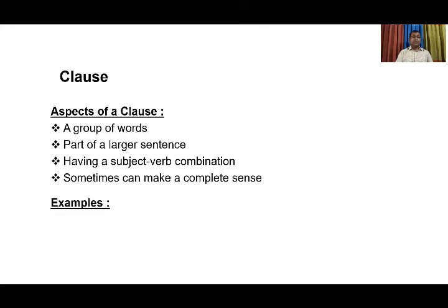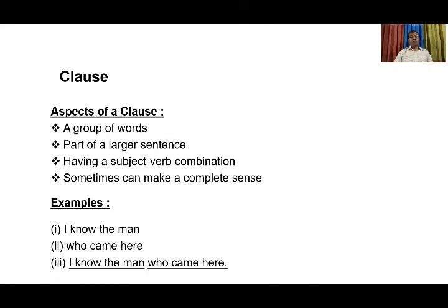Let's look at some examples. We have three examples here. First: 'I know the man.' Here we have a subject 'I' and a verb 'know', so it's a clause. Second example: 'who came here' — here 'who' is the subject and 'came' is a finite verb. In the third example, 'I know the man who came here', the first sentence and second sentence are united together. If we analyze this sentence, we find two sections: 'I know the man' and 'who came here'. Each part has its own subject and its own verb. That is why we have two clauses here.